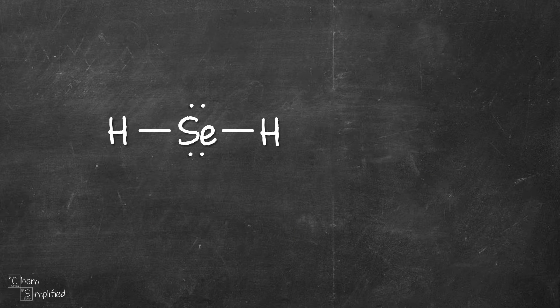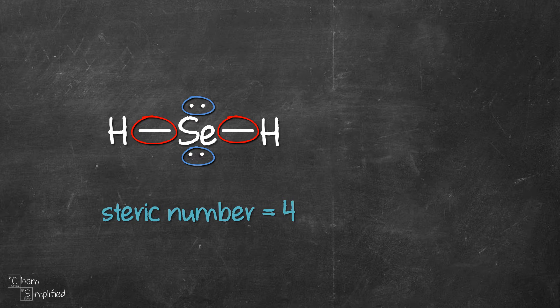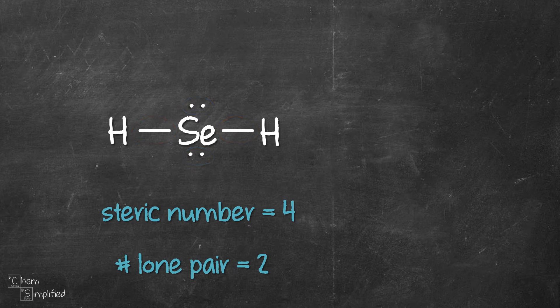And last but not least, our final example: SeH2. Se is the central atom. There are two groups and two lone pairs connected to it, so the steric number is 4. As mentioned, two lone pairs.